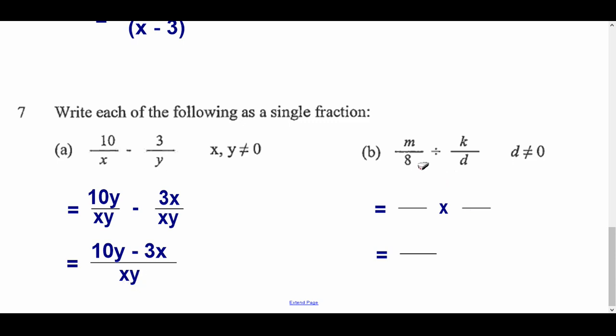Right. Last one. When you're dividing fractions, you flip the second one and multiply. So, the first one stays the same. You can see I've got a multiply here. But the d is going to the top and the k is going to the bottom. And then just do m times d, md. And 8 times k, 8k. And that concludes all the algebra in the specimen one.